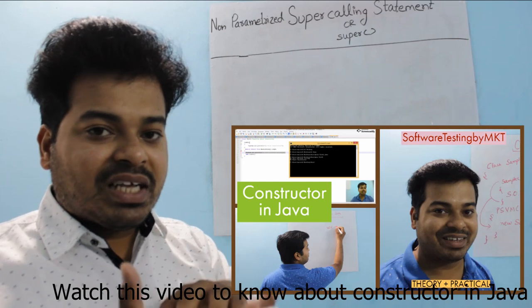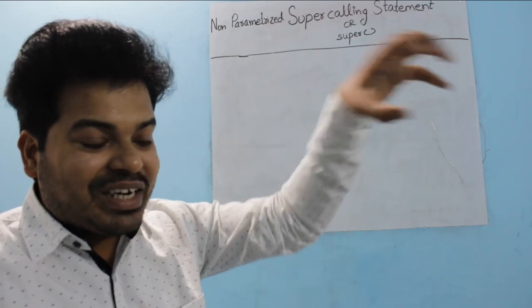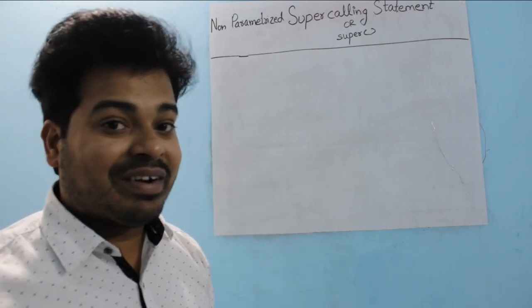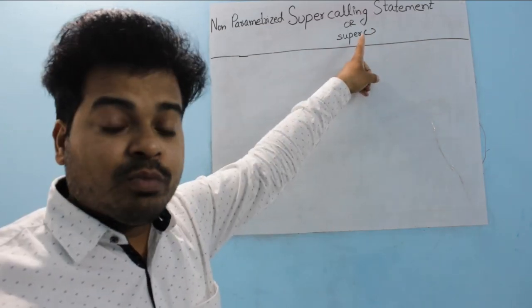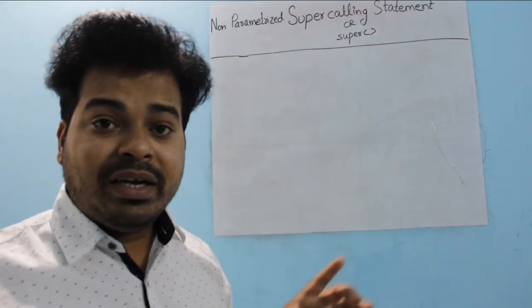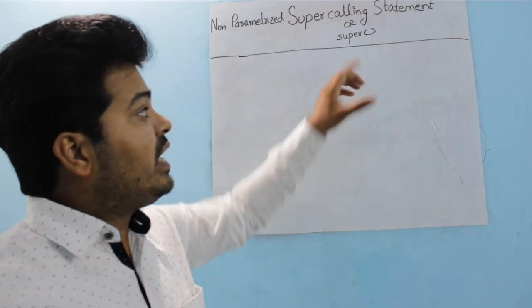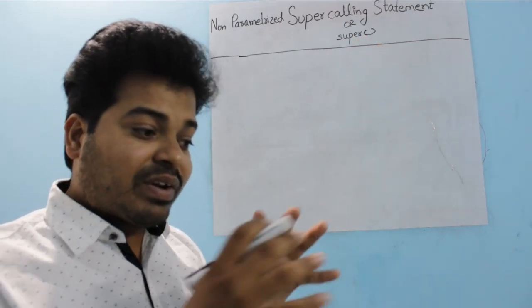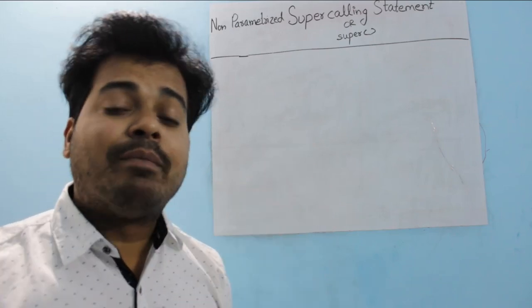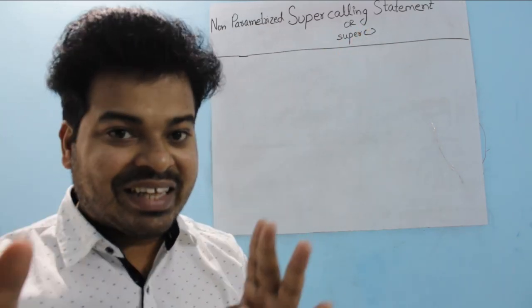To be precise, the super calling statement is used to call from a subclass constructor to the immediate superclass constructor. You call it with a super calling statement without any parameter in it. If you write the super calling statement explicitly, then the compiler will not write it implicitly — but if you write it explicitly, it will be visible in the program and the compiler will not need to write it again.